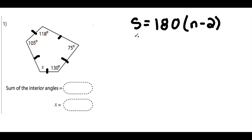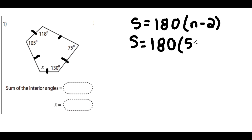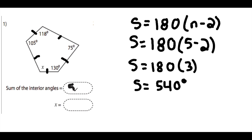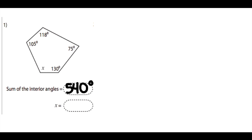We go back to our formula and substitute 5 in for n. Simplifying: S = 180 times (5 minus 2) = 180 times 3, which is equal to 540 degrees. So the angle sum for our pentagon is 540 degrees.